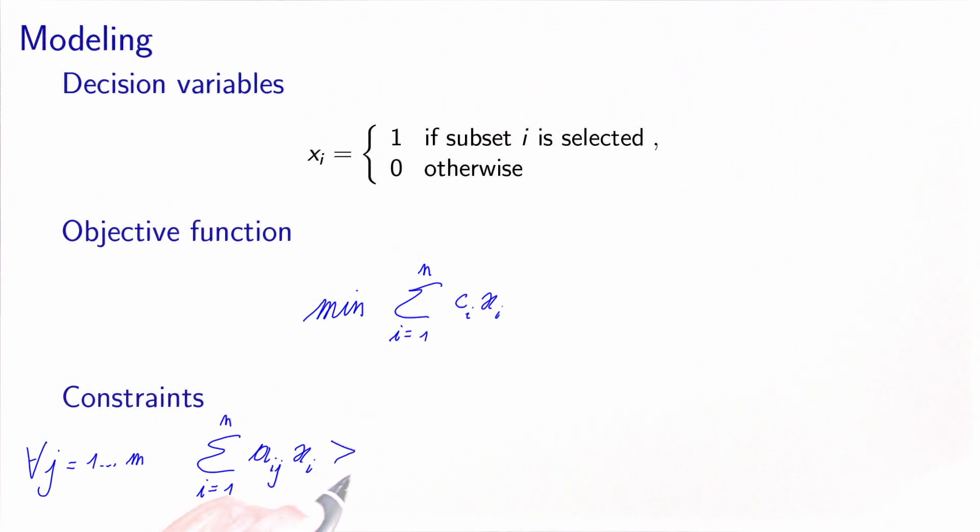And this must be greater or equal to one. I need at least once item j. If I have it more than once, it's okay, but I need it at least once. And then, of course, the variables must be binary.